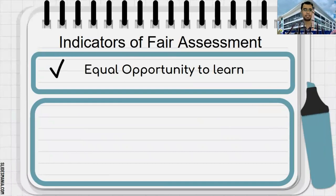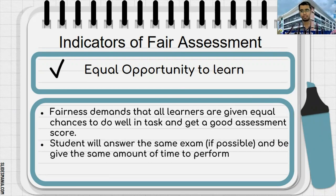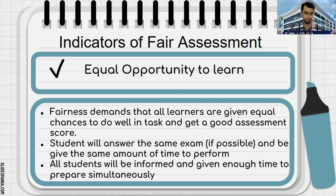Another indicator of fair assessment is that all students must be given equal opportunity to learn. Fairness demands that all learners are given equal chances to do well in tasks and get good assessment scores. Everybody must answer the same exam and be given the same amount of time to perform. If one student is given 30 minutes, other students must also be given 30 minutes to complete the task. All students should be informed and given enough time to prepare simultaneously — not just class officers, relatives, or friends, but all of them.